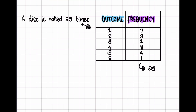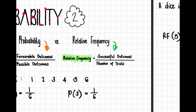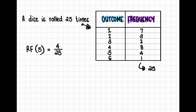So we have 25 throws in total. If I wanted to determine the relative frequency of it landing on a five, then relative frequency is the successful outcomes over the number of trials. How many times did it land on a five? Four times. Out of how many trials? 25. So there was a relative frequency of four over 25.